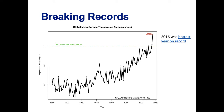This shows the global average temperatures — the global mean surface temperature from January to June each year. We're looking at these long-term climate records, and we have data that goes back as far as 1880. You can see that from about 1880 to 1940, the temperature went up and down every year, but it stayed in a similar range.